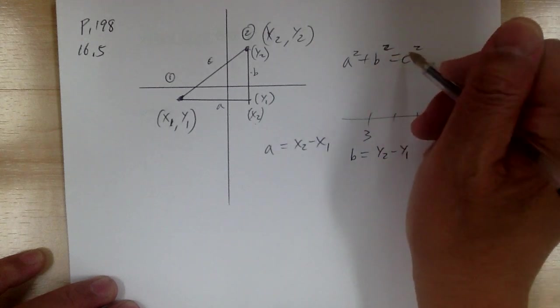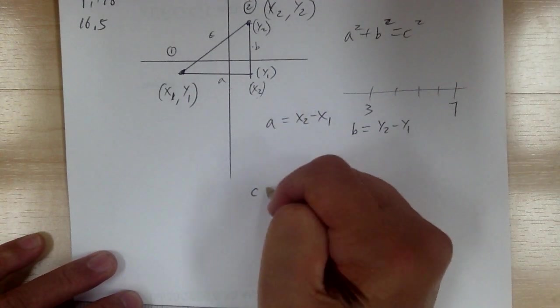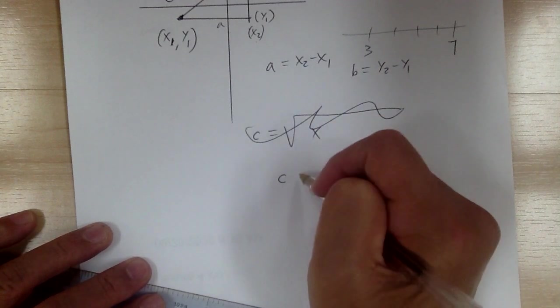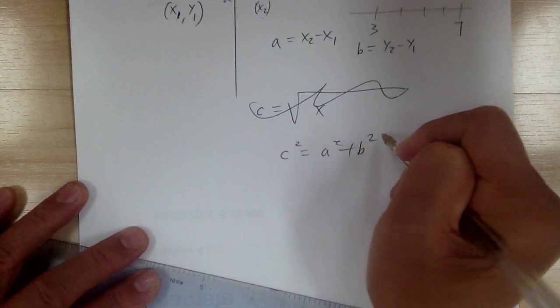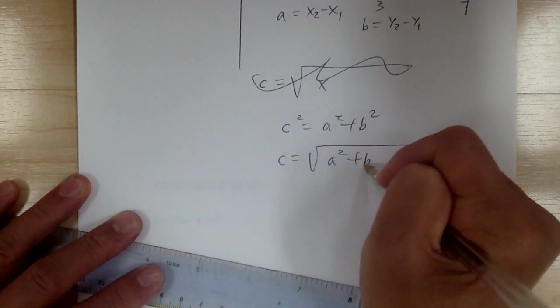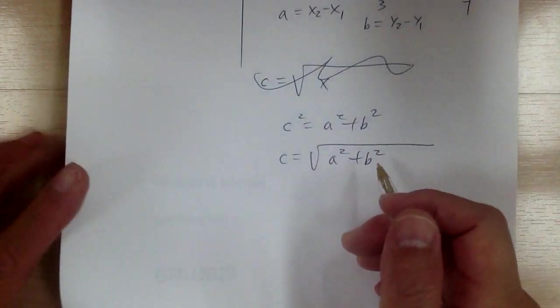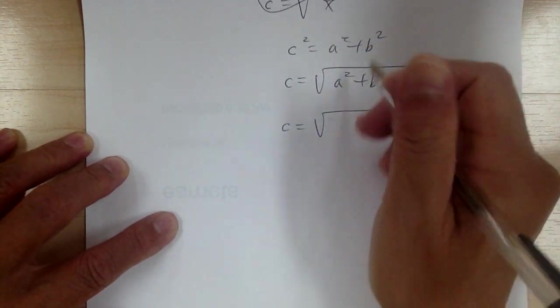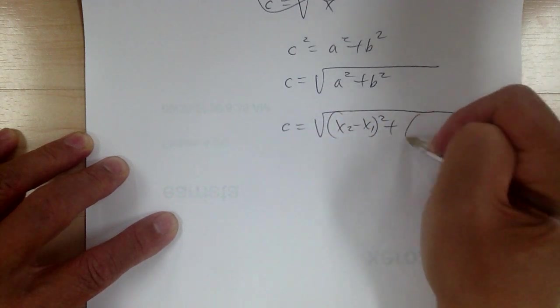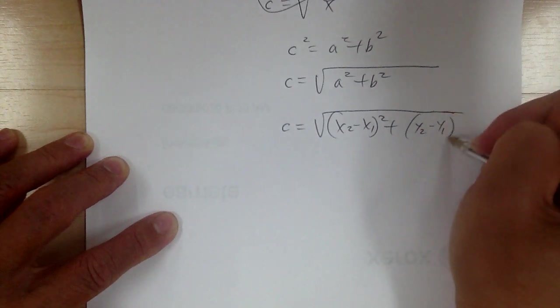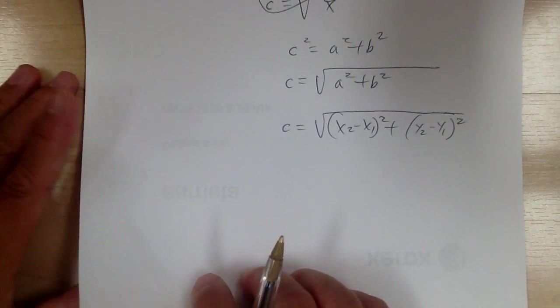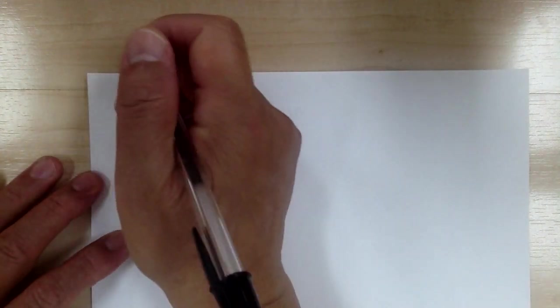Applying this into the Pythagorean theorem: c² = a² + b², so taking the square root of both sides gives c = √(a² + b²). Substituting in, the distance equals √((x2 − x1)² + (y2 − y1)²). That is the distance formula derived using the Pythagorean theorem. Now let's go to example 16-8.